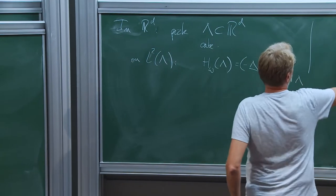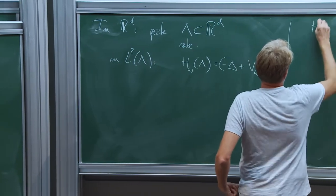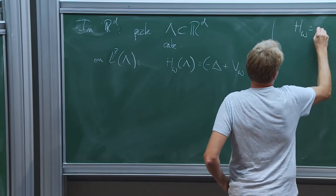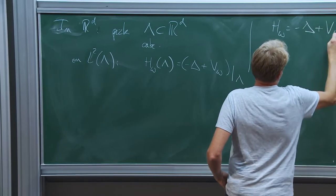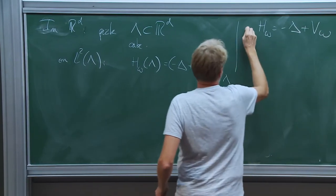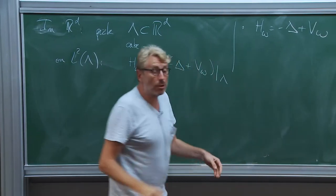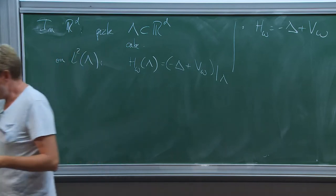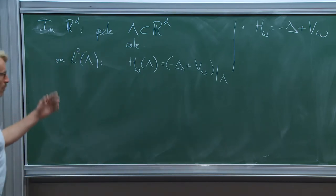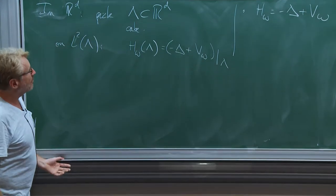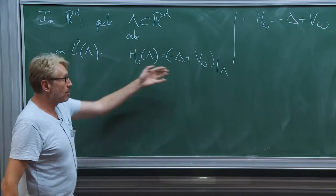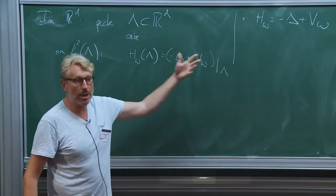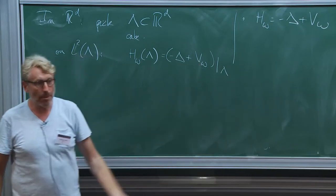So on R^d I have H omega, which is minus Laplacian plus V omega. You could consider Z^d in the same way. And if you are more comfortable with discrete operators, you can do the same thing with discrete operators.